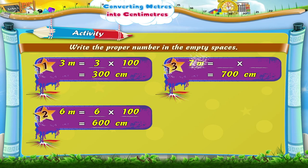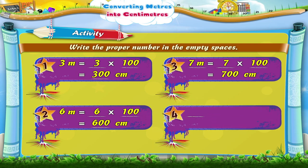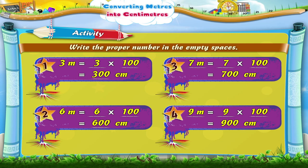7 meters equals 7 into 100, which equals 700 centimeters. 9 meters equals 9 into 100, which equals 900 centimeters.